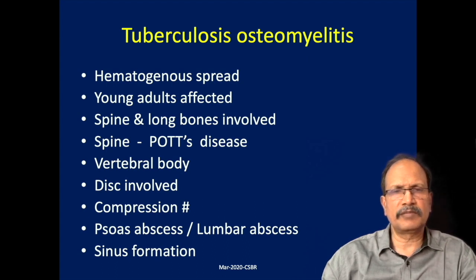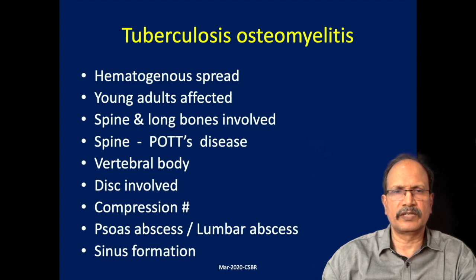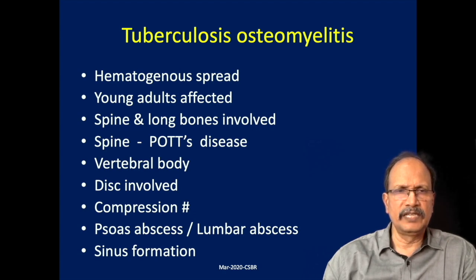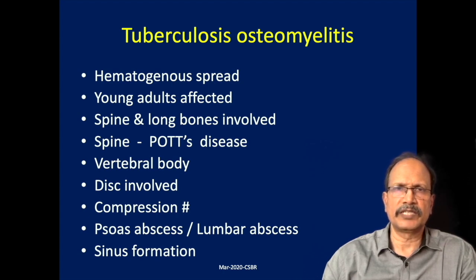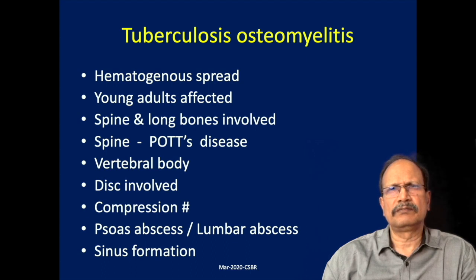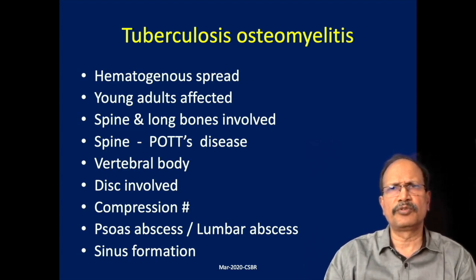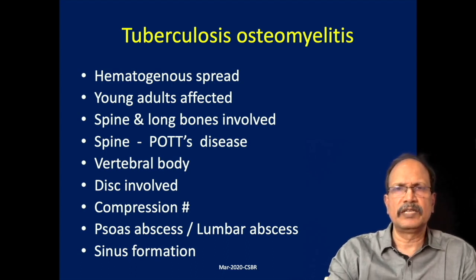Sometimes these abscesses or inflammation may track through natural passages and present in a different fashion. For example, in vertebral tubercular osteomyelitis, the pus or inflammatory exudate will track down anteriorly through the psoas sheath and produce a swelling in the inguinal region, which may be mistaken for an inguinal hernia. Or it may track posteriorly and produce a swelling in the lumbar region, with sinus formation in these patients.